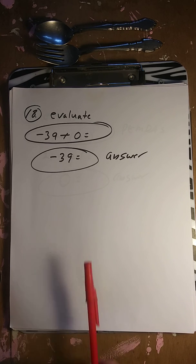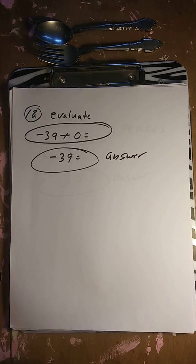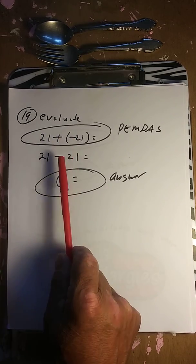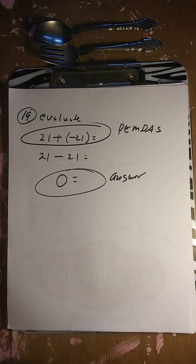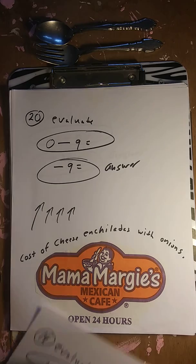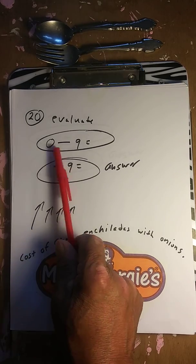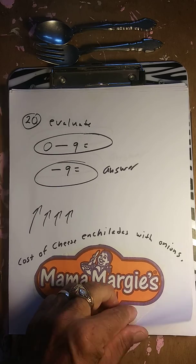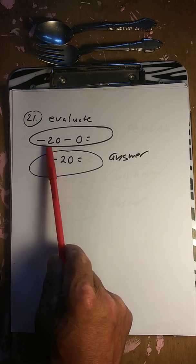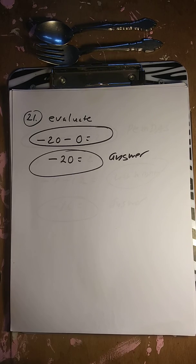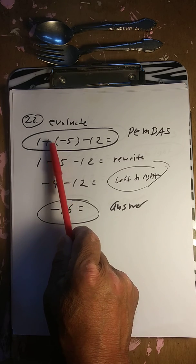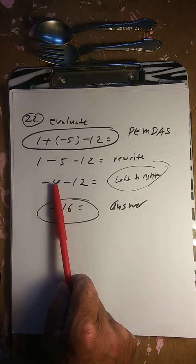Evaluate negative 39 plus 0: that's negative 39. Next: 21 plus negative 21 — positive and negative — so 21 minus 21 is 0. Evaluate 0 minus 9: that's negative 9. Negative 20 minus 0 is negative 20.